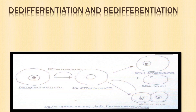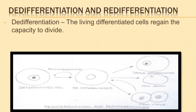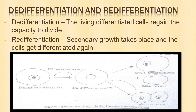Let us learn the meaning of two terms: de-differentiation and re-differentiation. The living differentiated cells regain the capacity to divide and re-divide under certain conditions. This phenomenon is known as de-differentiation. For example, formation of inter-fascicular cambium and cork cambium. Secondary growth takes place and the cells get differentiated again — that is, get re-differentiated.